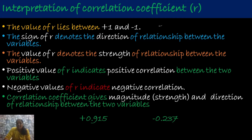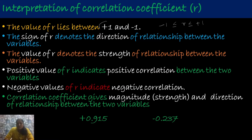I am just giving you the interpretation of correlation coefficient, that is nothing but R. The value of R lies between minus 1 to plus 1 — that is, it takes all the values in between minus 1 to plus 1. Here, the sign of R — that is, we have two signs, either positive or negative. The sign of R, plus or minus, denotes the direction of relationship between the two variables.